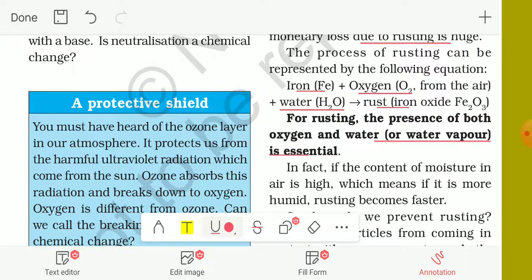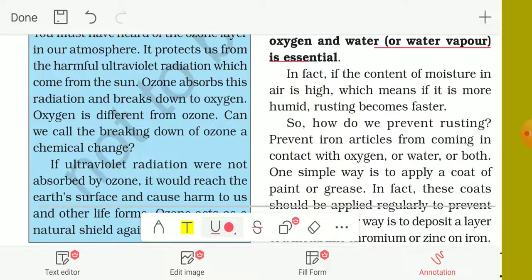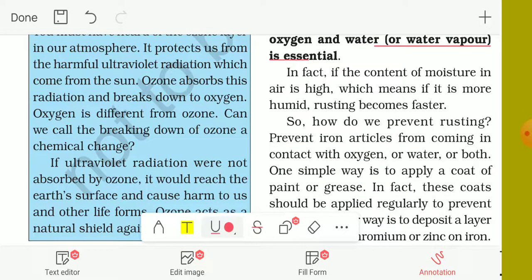Water vapor is essential for rusting. In fact, if the content of moisture in the air is high, which means if it is more humidity, rusting becomes faster.